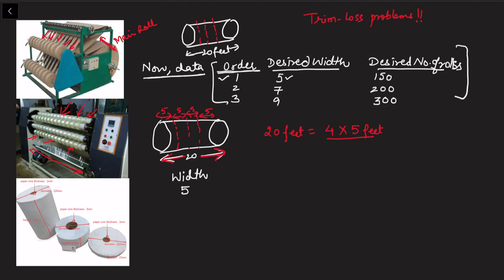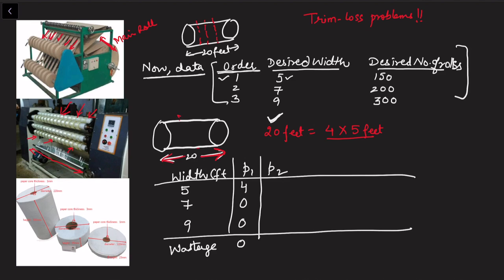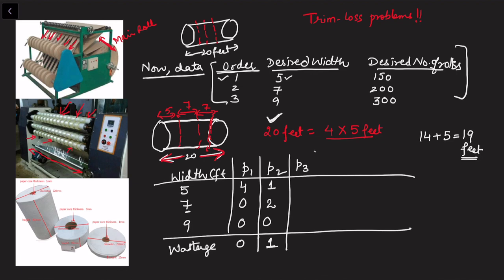We desire widths of 5 feet, 7 feet, and 9 feet as given in the question. For the first possible pattern, knowing the main roll has length 20, I can get four cuts of 5 feet with no cuts of 7 or 9, and wastage is zero. Another possibility: the first setting is for 5 feet, the next cut is 7 feet, leaving 12 feet. From 12 we can again cut 7 feet. That gives one roll of 5 feet and two rolls of 7 feet, totaling 5 plus 14 equals 19 feet, so wastage is 1 foot.